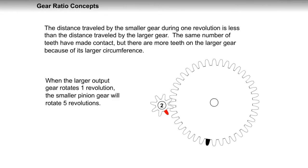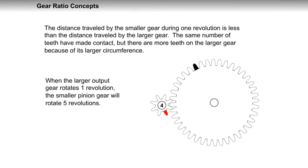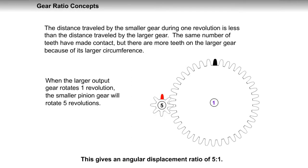When the larger output gear rotates one revolution, the smaller pinion gear will rotate 5 revolutions. This gives an angular displacement ratio of 5 to 1.